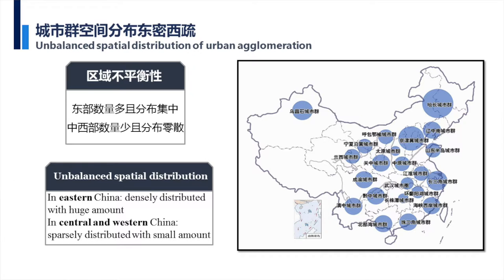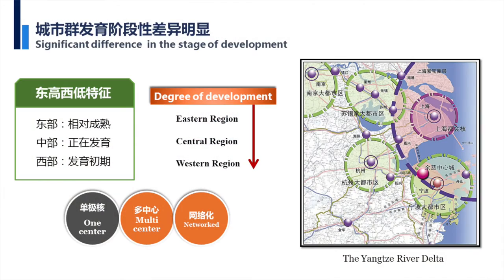For the maturity of the clusters, from east to west, the economic prosperity is reducing. So the maturity is reducing from east to west. For the western part of the clusters, they are still in the initial stage — the beginning stage. You can see the Yangtze River Delta region clusters as an example.